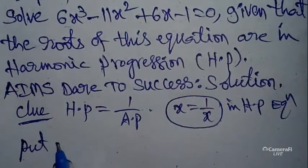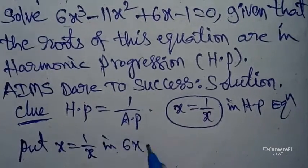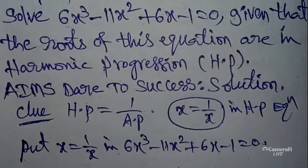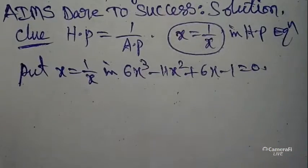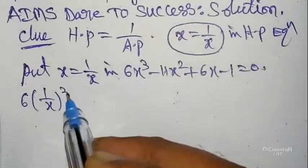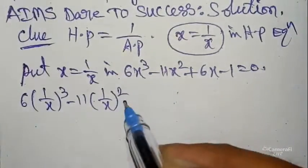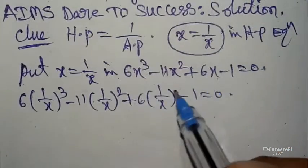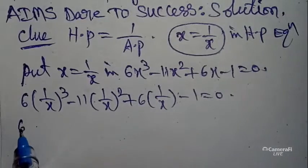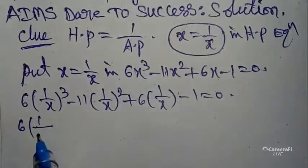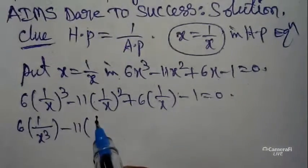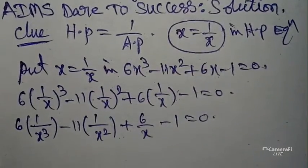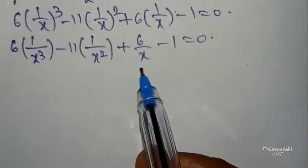Substitute x equals 1 by x in 6x³ minus 11x² plus 6x minus 1 equals zero. Substituting and simplifying, we get: 6 into (1/x)³ minus 11 into (1/x)² plus 6 into (1/x) minus 1 equals zero.